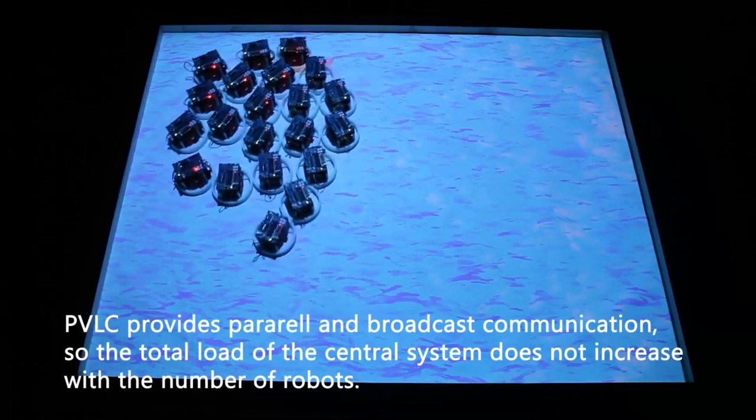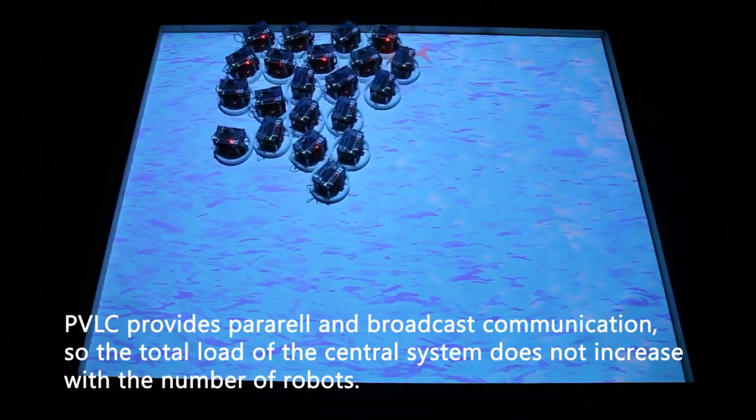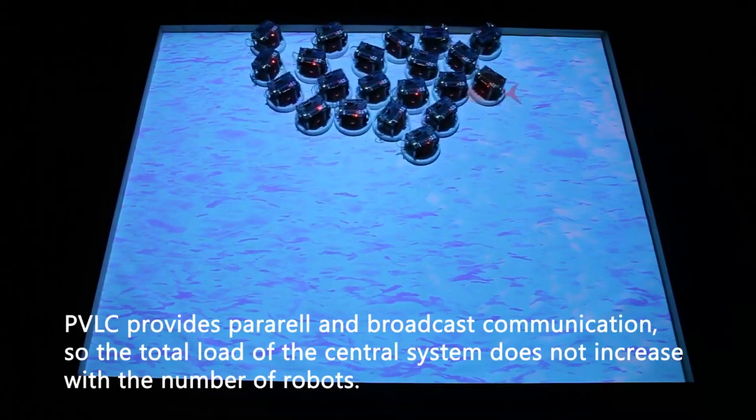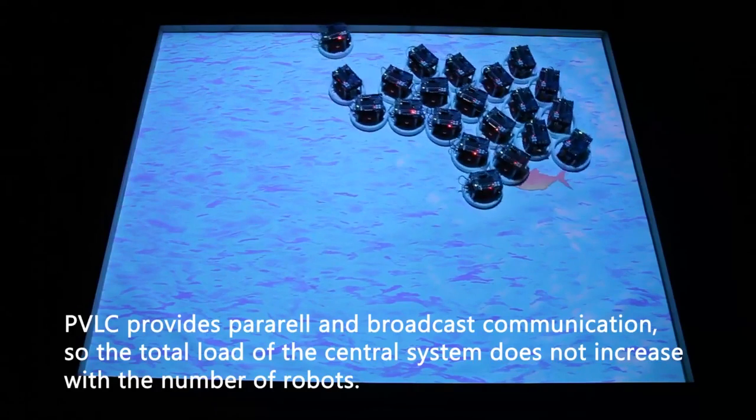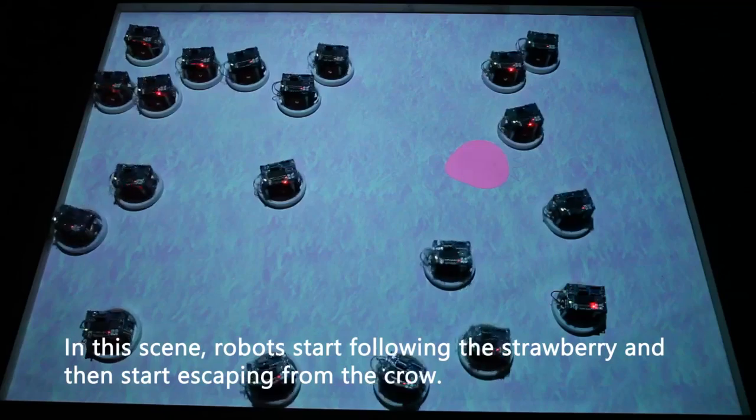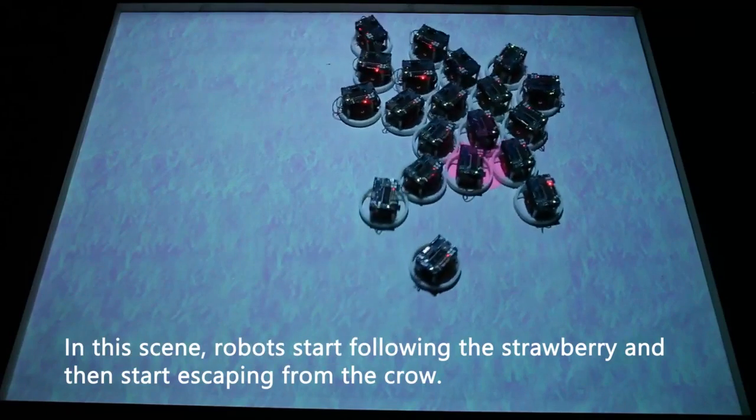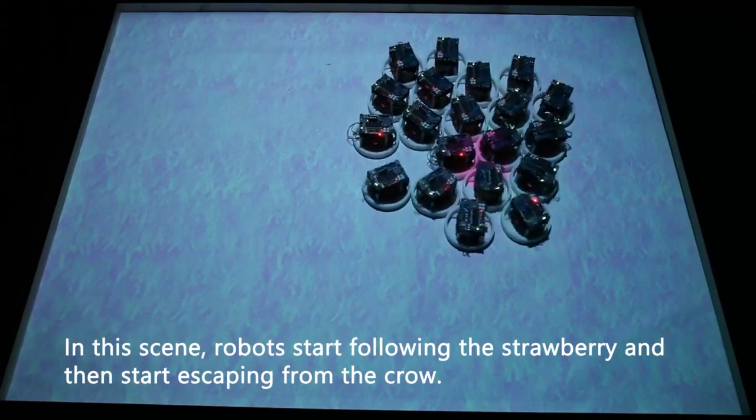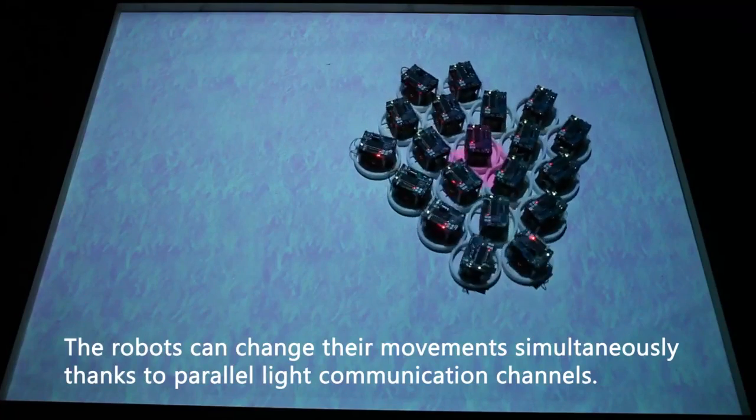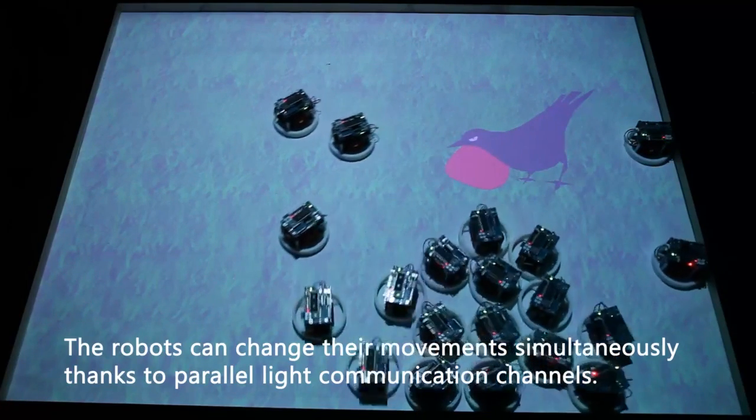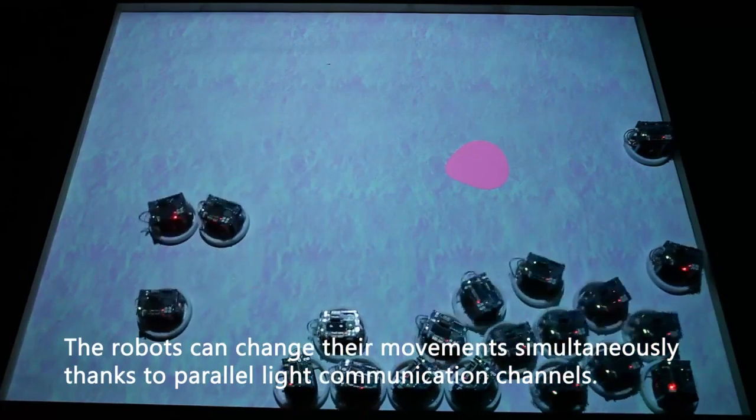PVLC provides parallel and broadcast communication, so the total load of the central system does not increase with the number of robots. In this scene, robots start following the strawberry and then start escaping from the crawl. The robots can change their movements simultaneously thanks to parallel light communication channels.